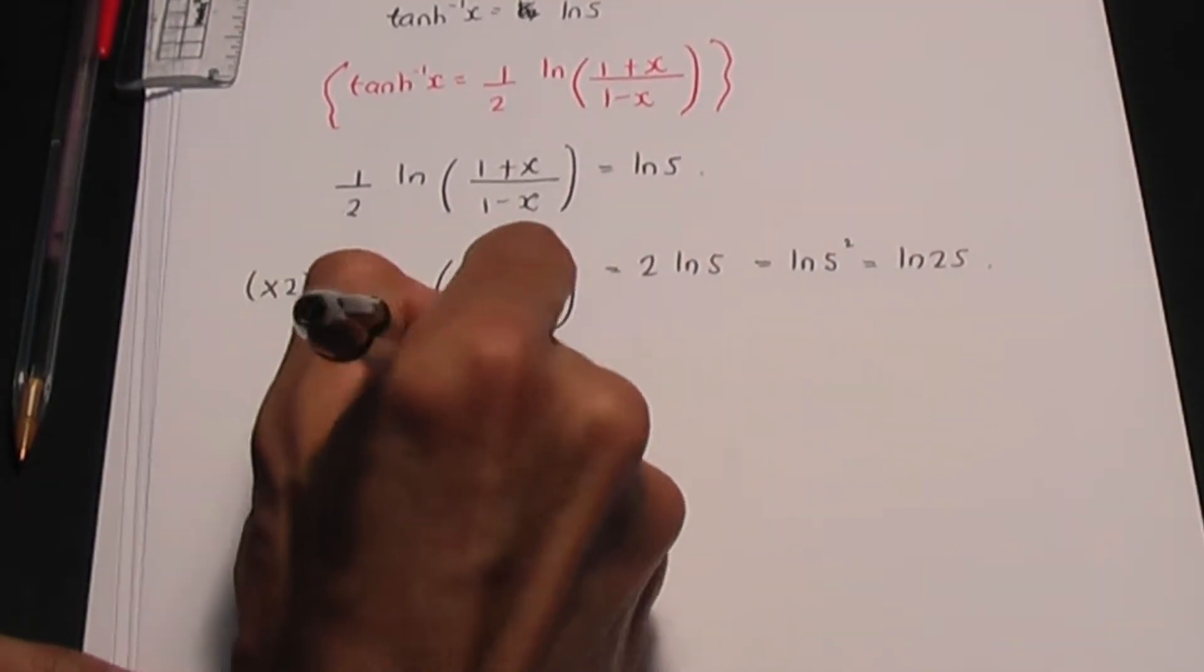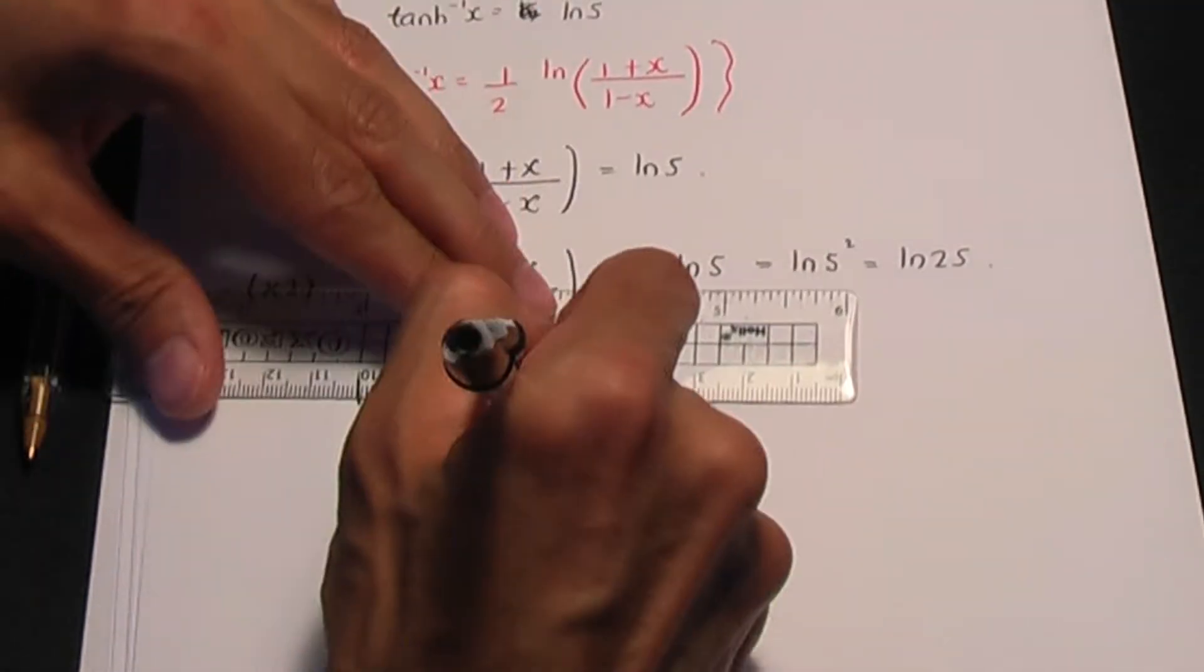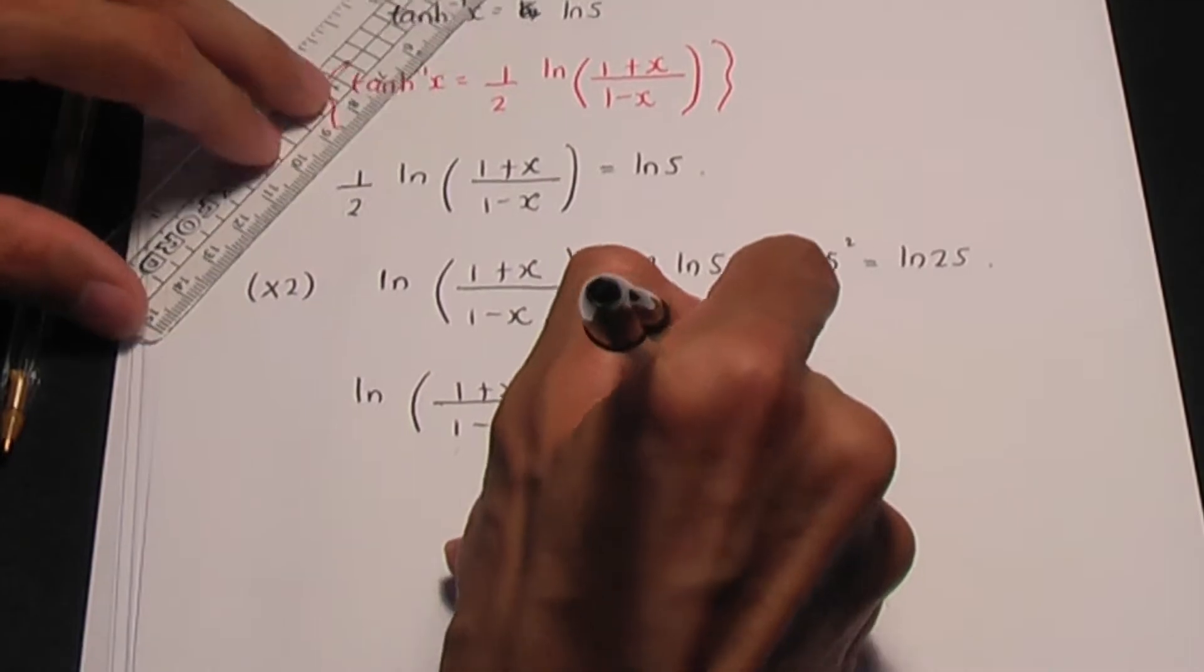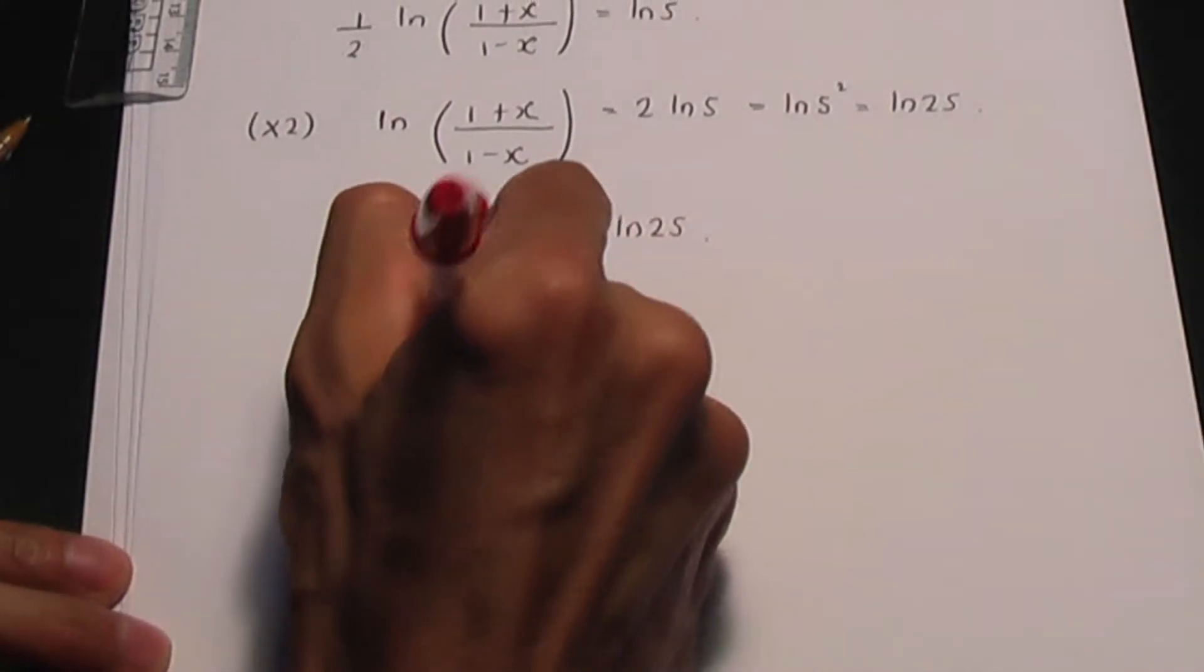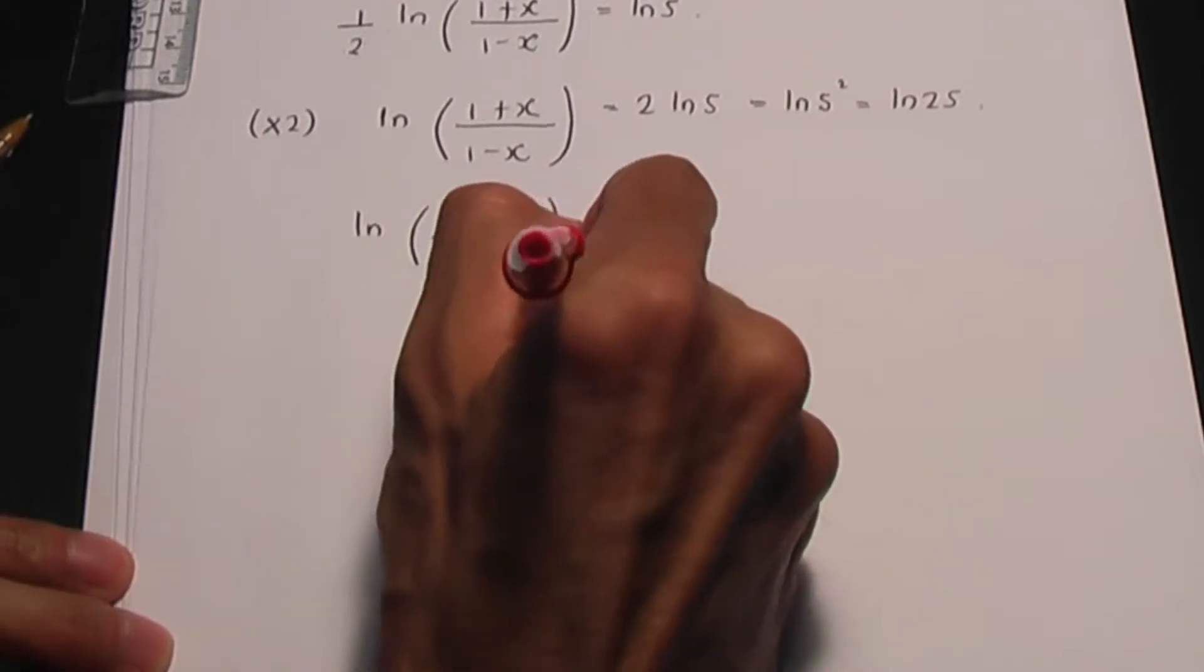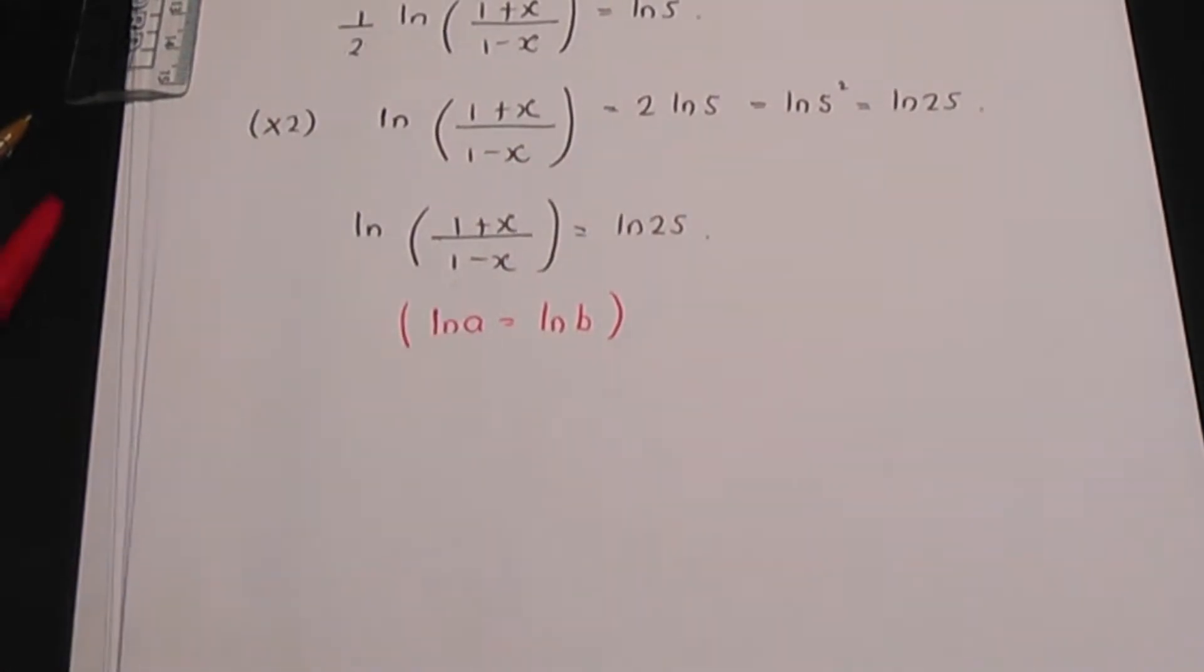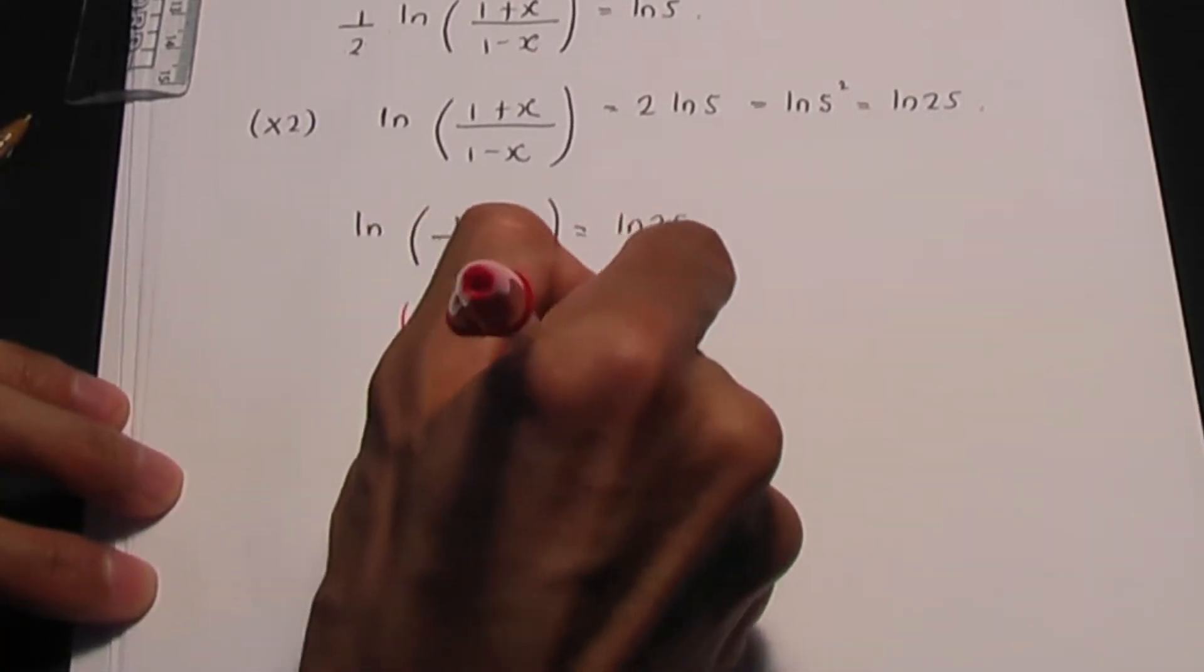So I have ln of 1 plus x over 1 minus x, that's equal to ln 25. And in this case, remember, if we have a term of the form ln A equaling ln B, that implies A equals B.